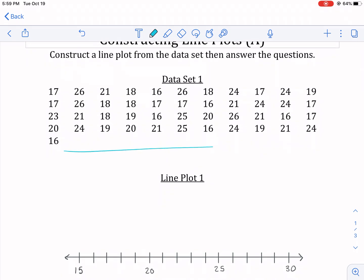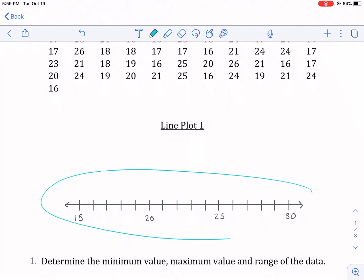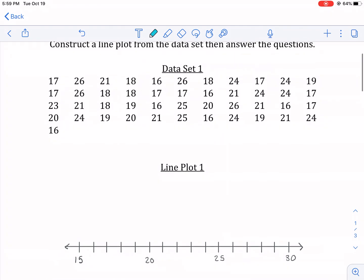So here's the data set. You'll notice that it's all unorganized. It just kind of goes in this random order, and we're asked to put it on a line plot. So the first thing we need is we need a line plot. It gives you space for that. You'll notice that I already made it and I started from 15. I went all the way to 30. Why did I do that?